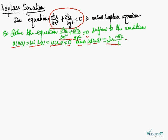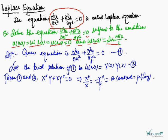We solve this equation with the method of separation of variables. Let the trial solution be u(x,y) = X(x)·Y(y), where capital X is a function of x only and capital Y is a function of y only.